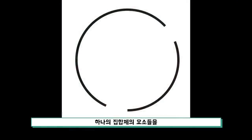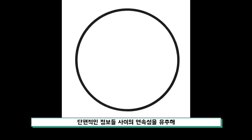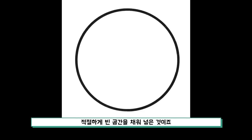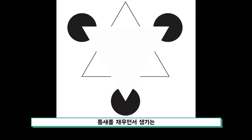반면 폐쇄성은 하나의 집합체의 요소들을 완전한 단위로 지각하는 경향을 말합니다. 위 그림을 보고 우리는 두 개의 분리된 곡선을 지각하는 것이 아닌 두 개의 틈이 있는 하나의 원으로 지각한다는 것입니다. 단편적인 정보들 사이에 연속성을 유추해 우리의 지각 시스템이 적절하게 빈 공간을 채워 넣은 것이죠.